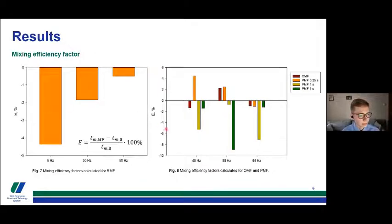As we can see the same results on the previous slide, the pulsating magnetic field with the pulse of five seconds gave the best results. It is 9% better than the control measurement.